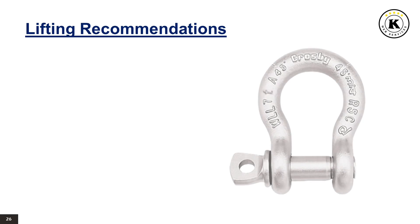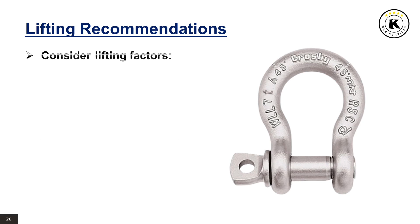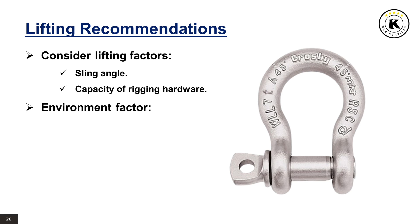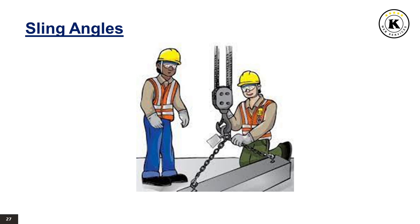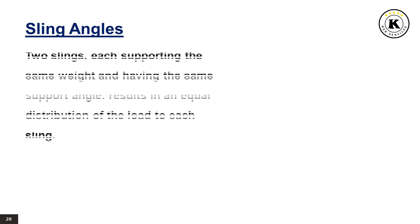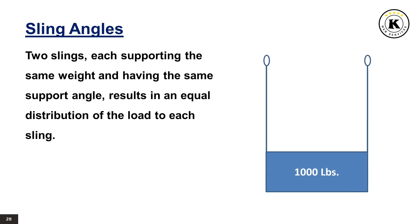When lifting, consider the following factors: sling angle, capacity of rigging hardware, environmental factors, wind, and weight of the load. Two slings, each supporting the same weight and having the same support angle, results in an equal distribution of the load to each sling.